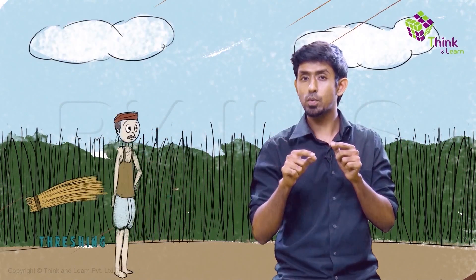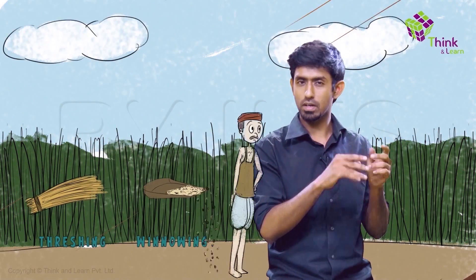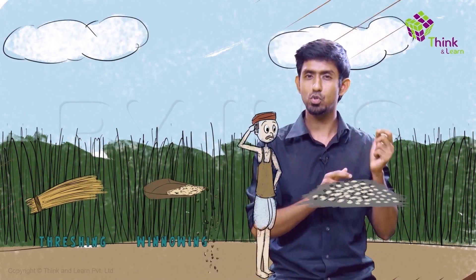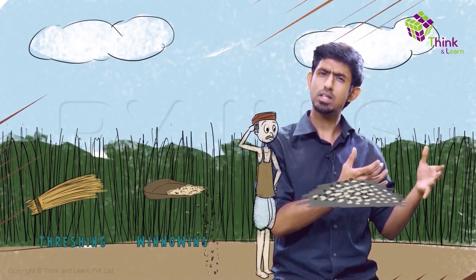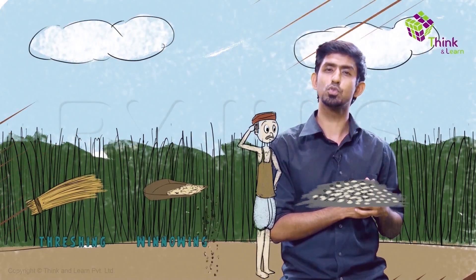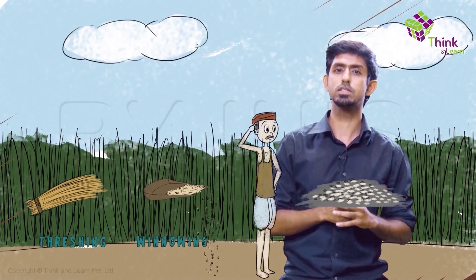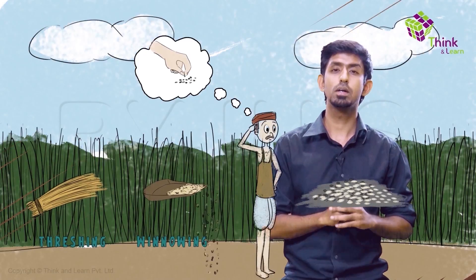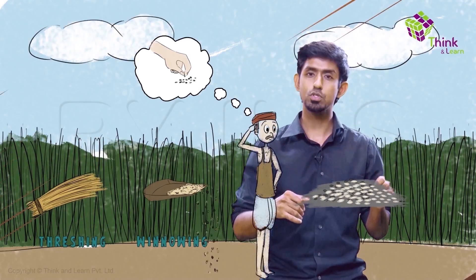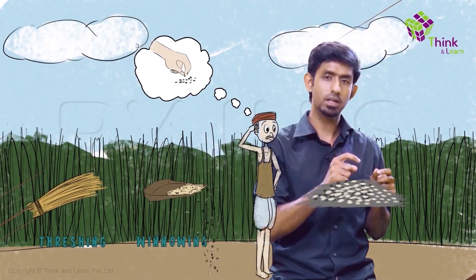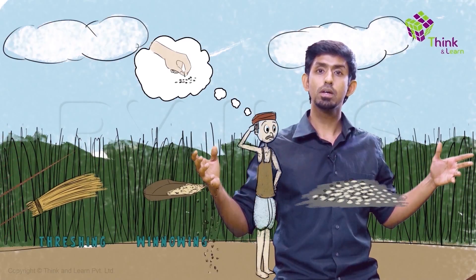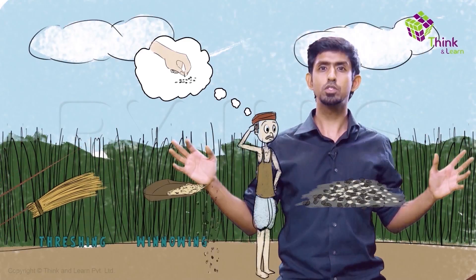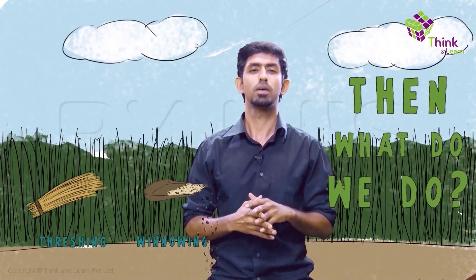We've done our threshing, we've done our winnowing, now we have rice mixed with stones. We think maybe we can separate the rice and the stones using the old method — hand picking by appearance, because the stones look somewhat black and the rice looks white. But there seem to be way too many stones in this rice. Then what do we do?